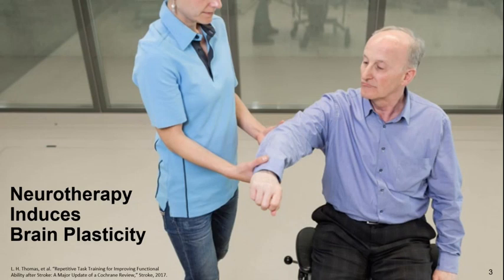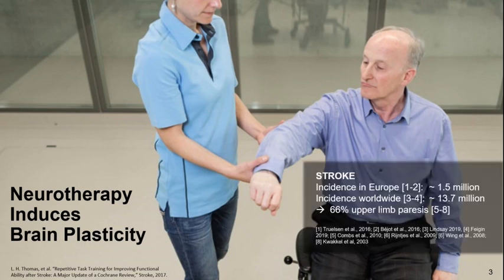There are different medical conditions and traumata that can lead to injuries of the central nervous system. Often these injuries lead to impairments of the motor function. Stroke is one of the major causes with high incidence, particularly in the elderly population.